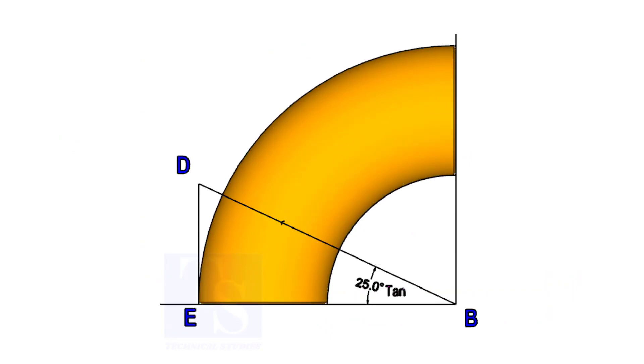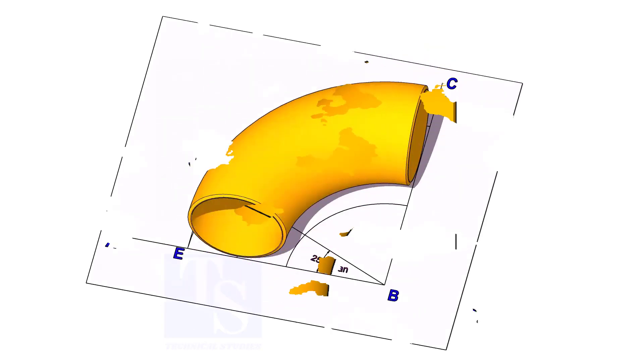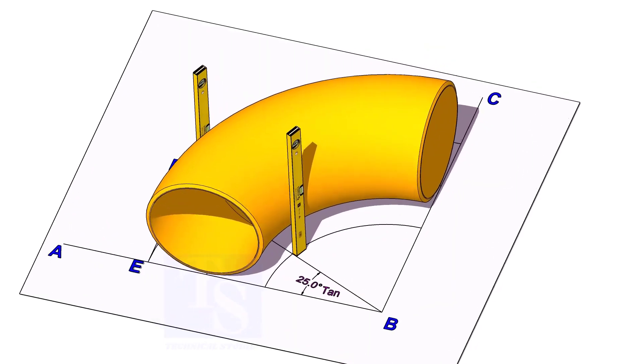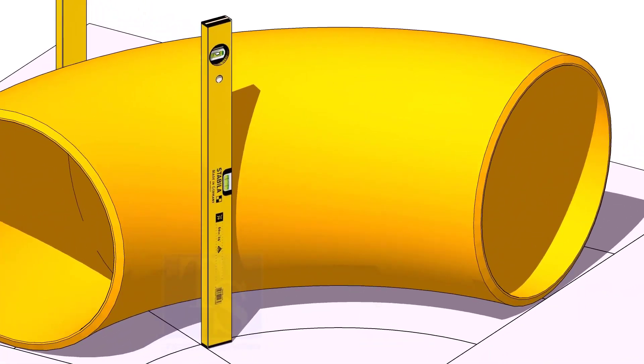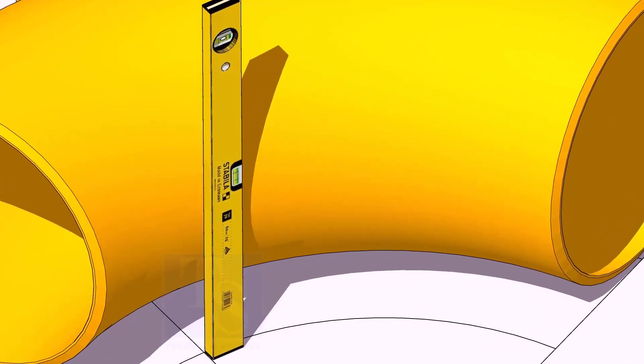Now, put the elbow exactly on the layout as shown. Hold two large level bottles at the edge of the elbow on both sides vertically and strike a mark where the level bottle edge touches the elbow.